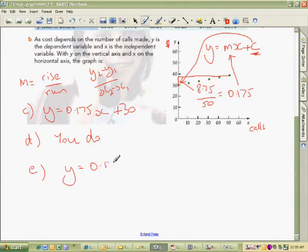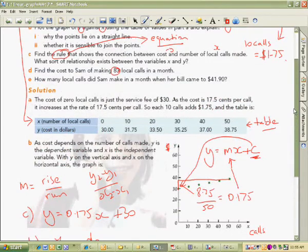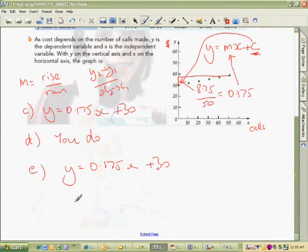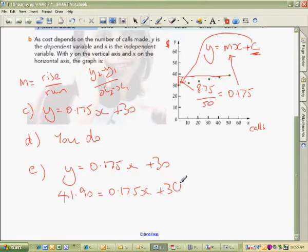Y equals 0.175X plus 30. But now we've got the answer part, if you like, the Y part: $41.90. So what we want to know is for $41.90, how many calls had to be made for this? Okay. So I'm just going to get my calculator out for a moment. You get yours out too while I'm waiting. And it'll just take me a minute to calculate it.